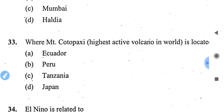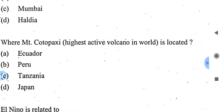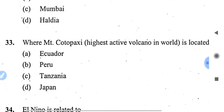Which is the highest active volcano in the world? Mount Cotopaxi is the highest active volcano.